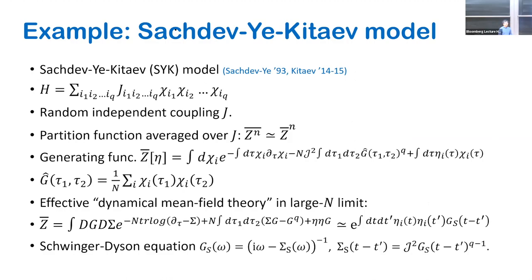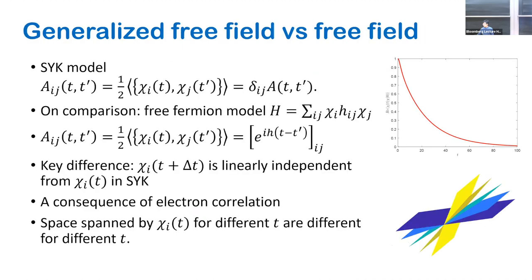I want to clarify: the SYK model having this large-N solution and generalized free fields has nothing to do with the low temperature limit. At finite temperature this model doesn't have the emergent conformal symmetry, so it could be very far from the conformal limit. The requirement that you have a generalized free field is separated from the conformal symmetry. This construction is not specific to SYK — we're using SYK as an example of a model with generalized free fields.